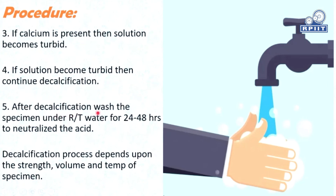Then after decalcification, wash the specimen under running tap water for 24 to 48 hours to neutralize the acid. After the bone has reacted with the acid, to neutralize it, it is kept in running tap water for 24 to 48 hours. The decalcification process time depends upon the strength, volume, and temperature — and the quantity of calcium present inside the bone.